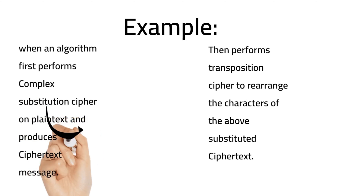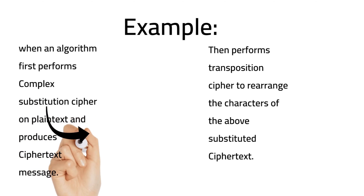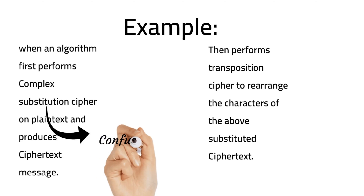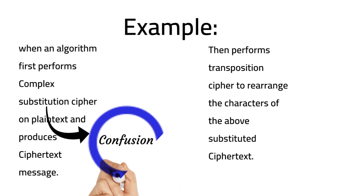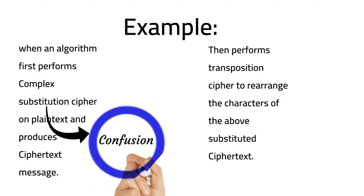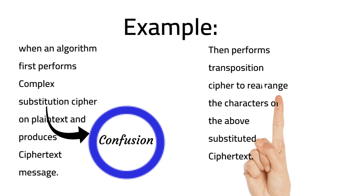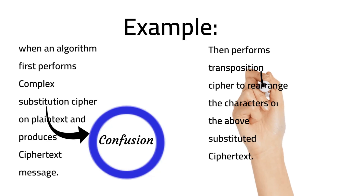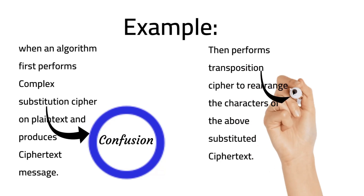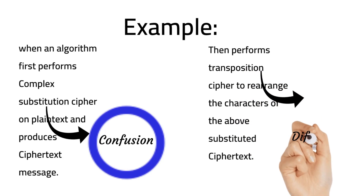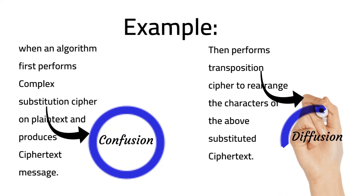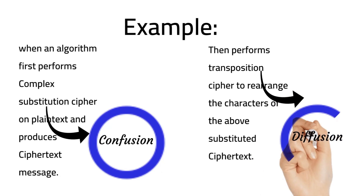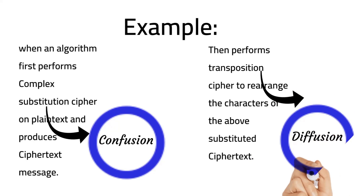Then it performs a transposition cipher to rearrange the characters of the above resulted cipher text. Here we are performing two operations: both substitution and transposition. In this example, substitution introduces confusion, and transposition introduces diffusion.